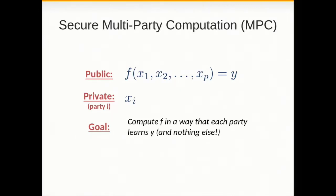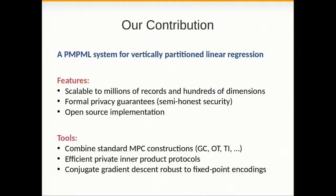We have to come up with a dedicated custom algorithm that uses several techniques to gain scalability for these applications, where for example you have millions of records and hundreds of features. So that brings us to our contribution which is a system for doing linear regression in a privacy-preserving way in the vertically partitioned dataset setting. The features of our system is that it does scale to millions of records and hundreds of dimensions in less than one hour, which is quite good. It has formal privacy guarantees and we have an open source implementation that you can use.